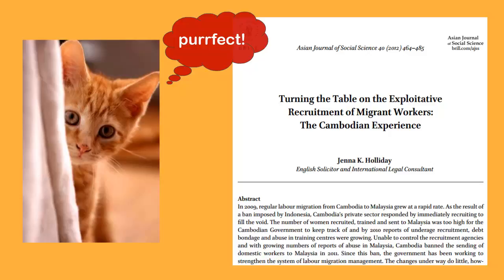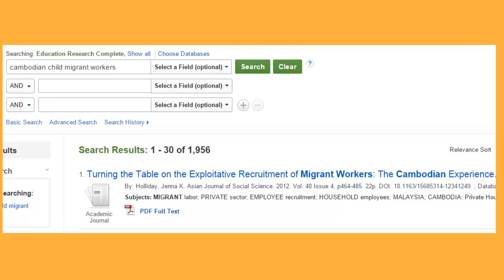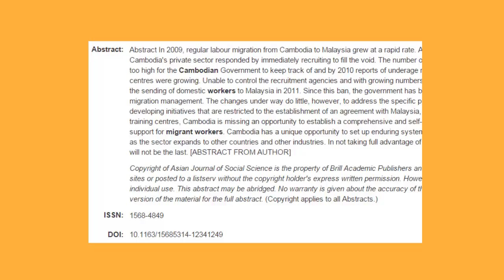So you've found your perfect article, but how do you find the DOI? There are four places to look. From the database results page, the DOI is often listed with the article's information. When you click on the title of an article, the DOI is usually listed somewhere on this next page. In this example, it's below the abstract.